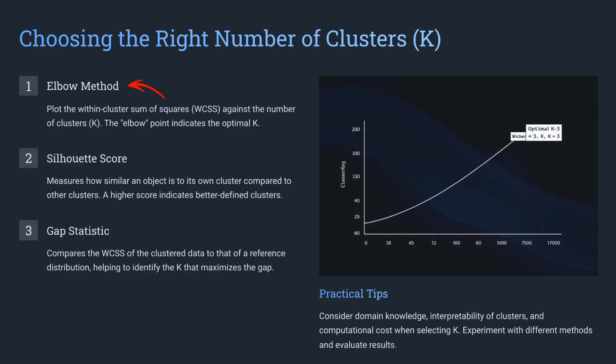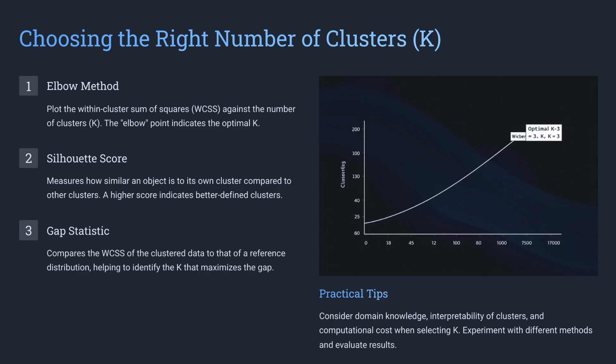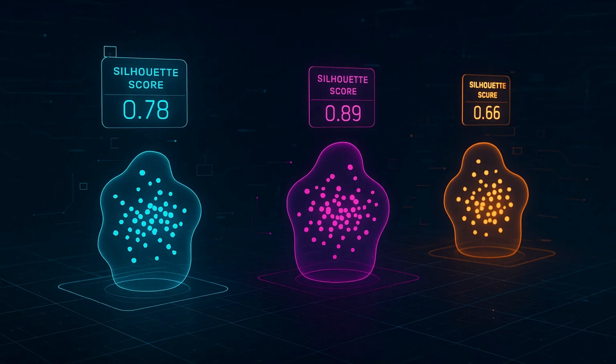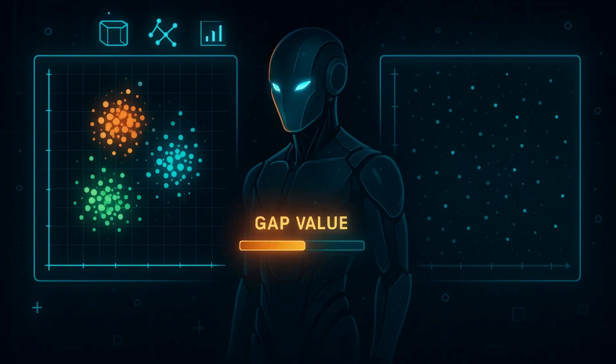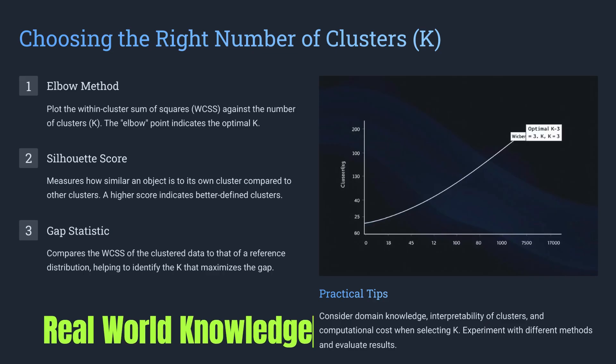One of the trickiest parts of using k-means is deciding how many clusters to use. A common method is the elbow method, where you plot the error for different k values and look for the bend or elbow in the line. Another way is the silhouette score, which measures how well each point fits into its cluster, with higher scores meaning better grouping. The gap statistic compares your data to random data to find the best k. Choosing the right k often comes down to a mix of these methods and some real-world knowledge about the data.